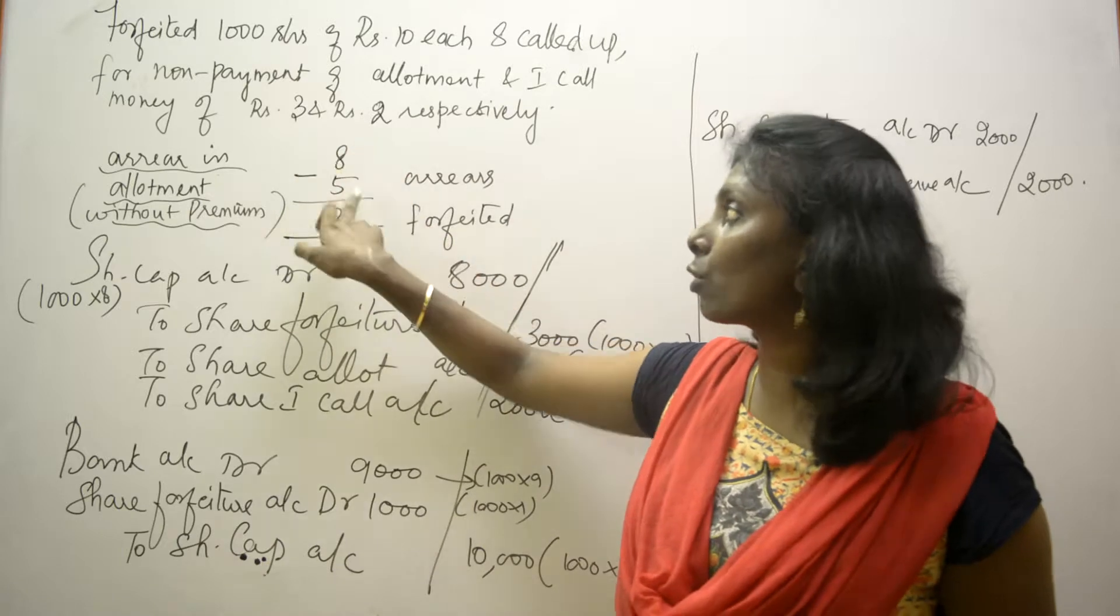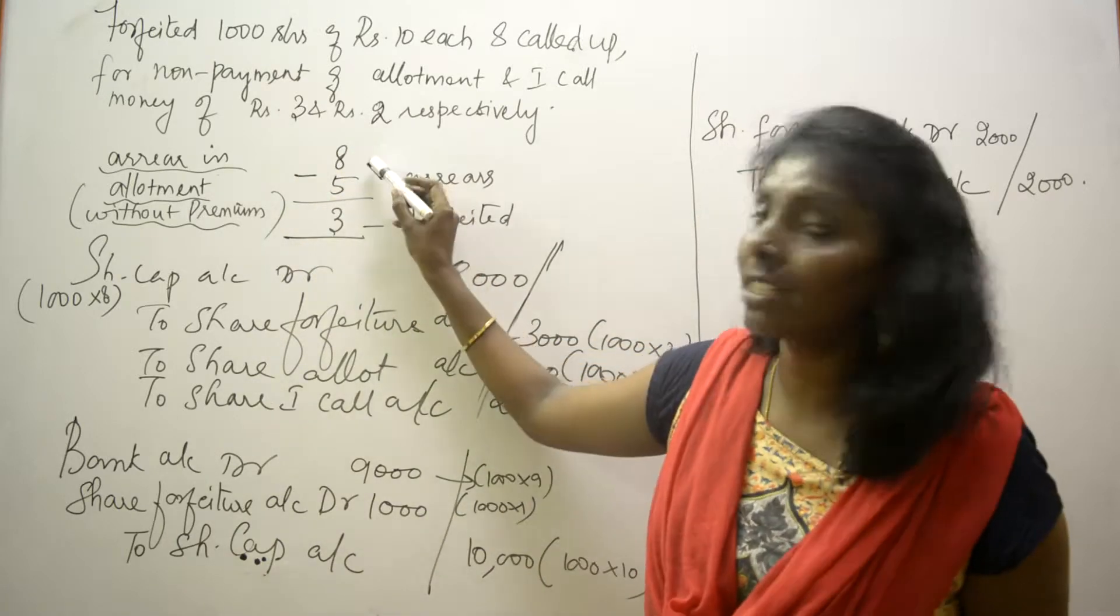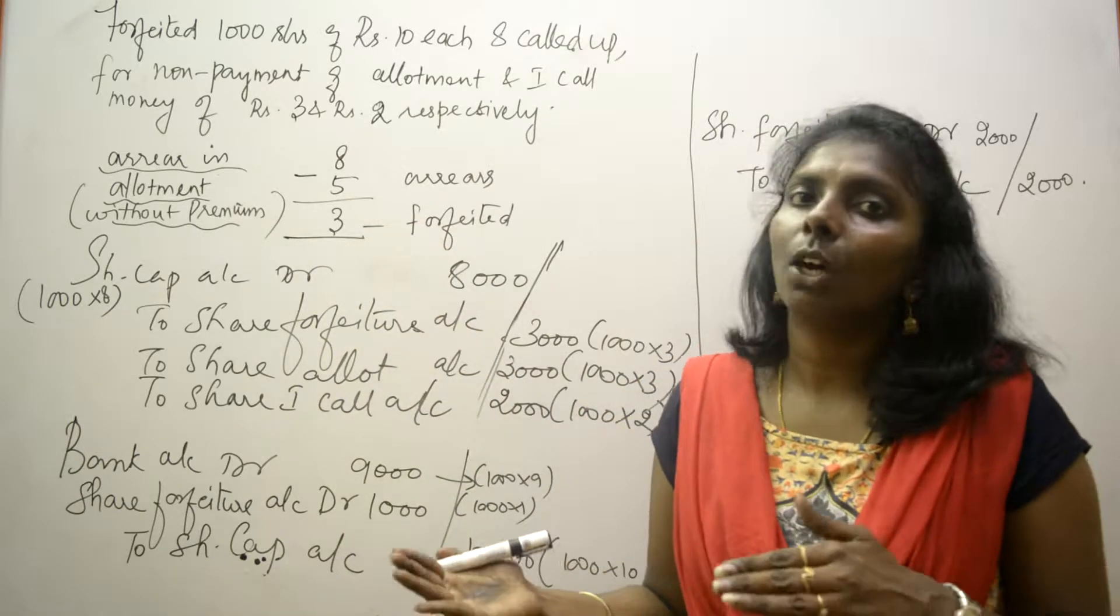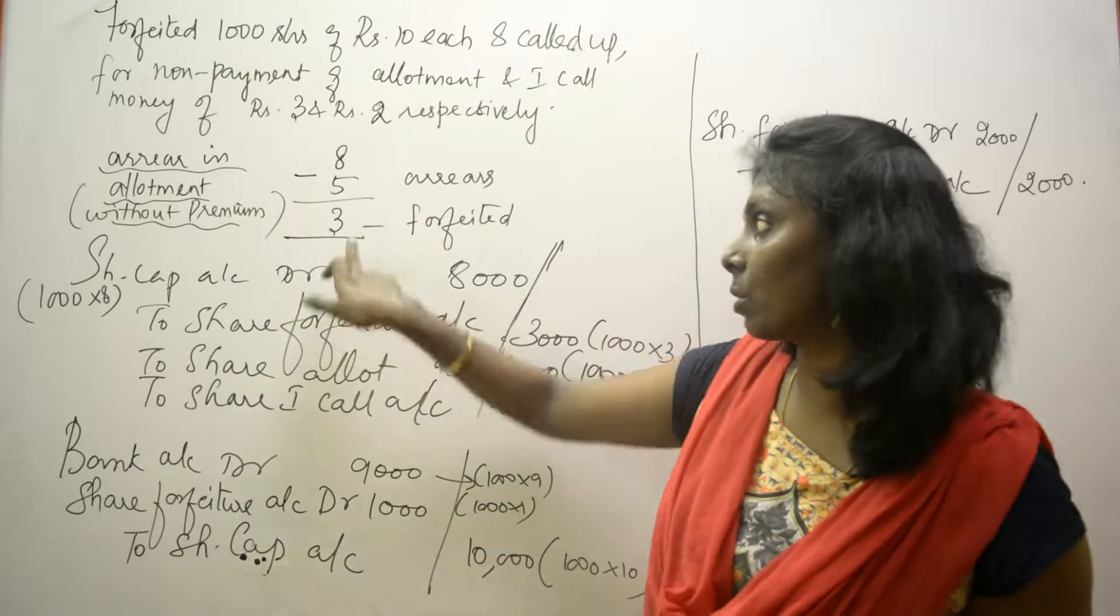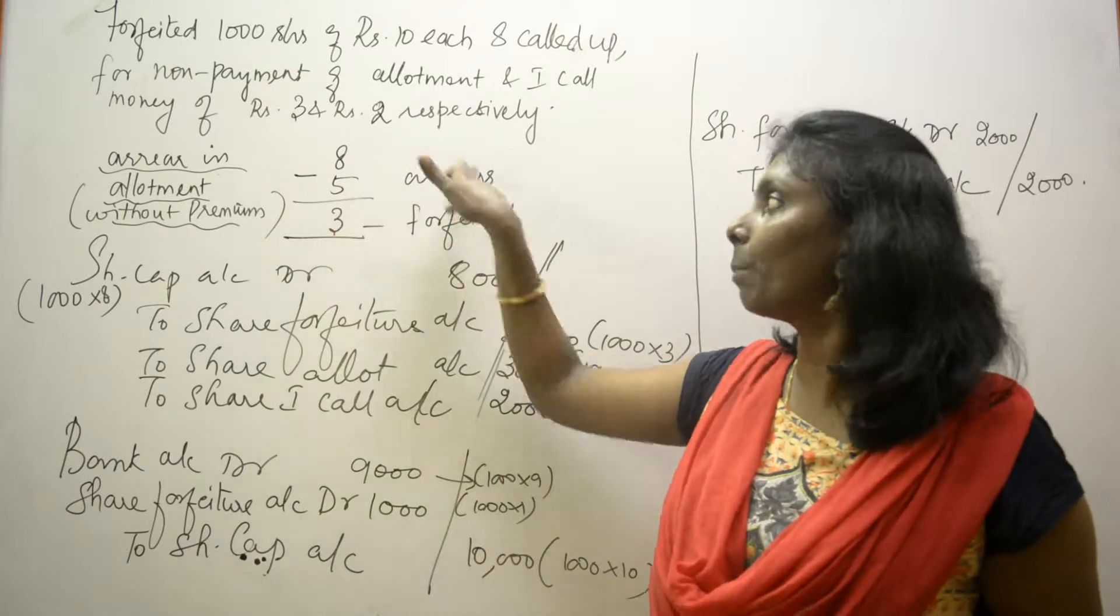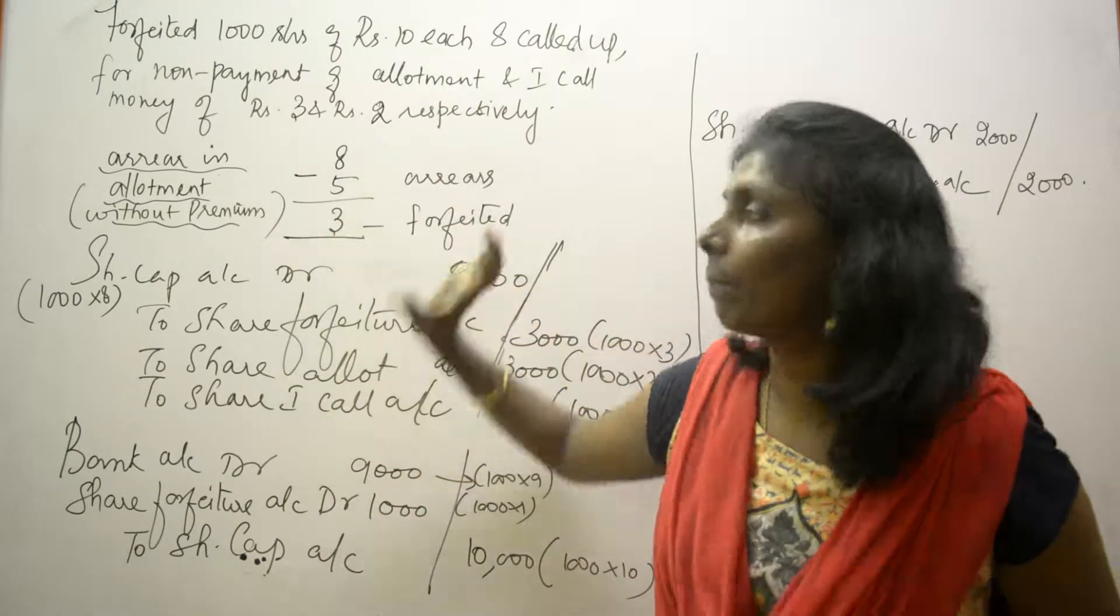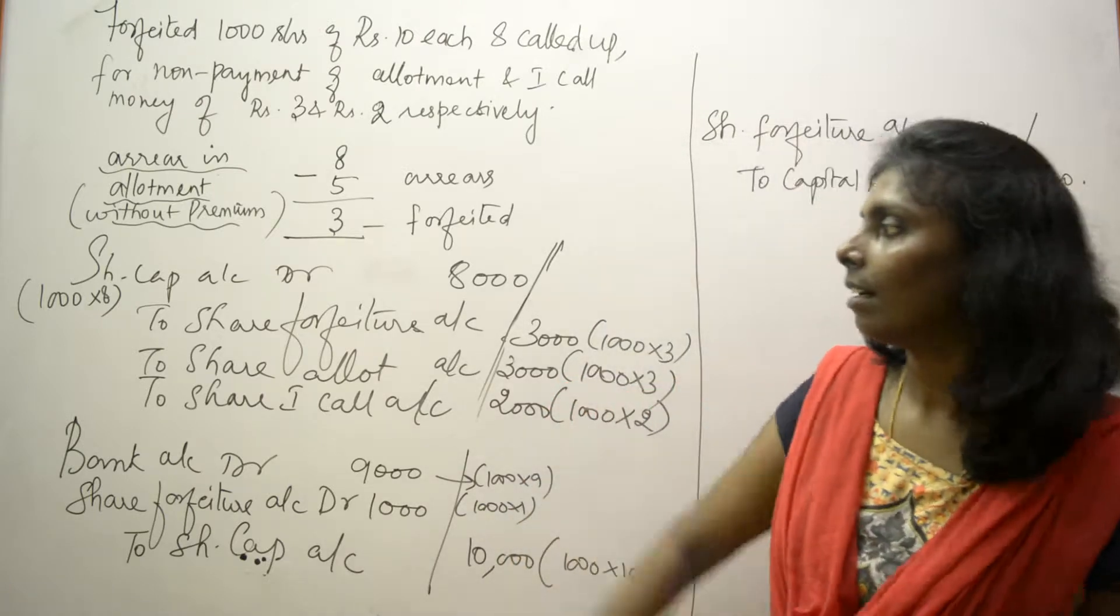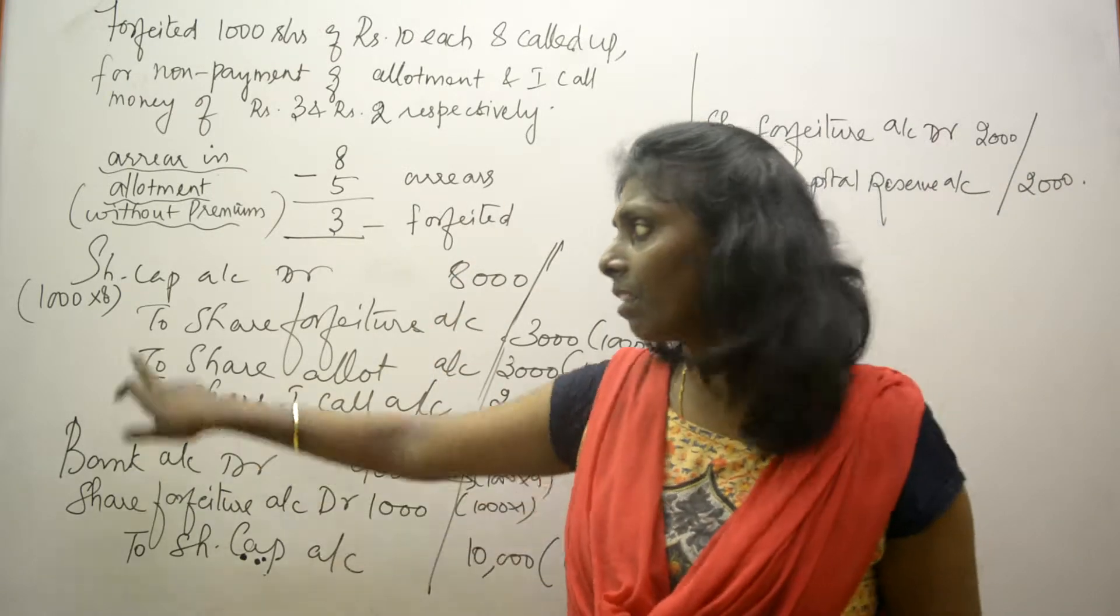Out of 8, if you don't receive 5, the amount received is only 3. Always, only the amount received is forfeited, so 3 rupees should be forfeited, 5 rupees is arrears. This simple calculation will help you in passing the journal entries.